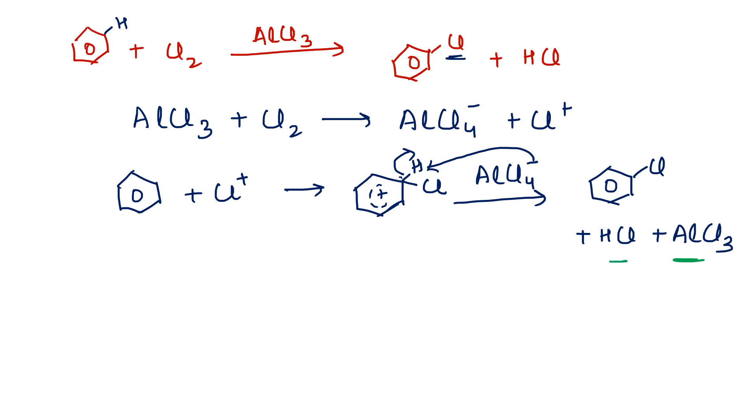HCl is a byproduct and the chlorobenzene is the final product which is formed. This is an example of electrophilic substitution reaction.